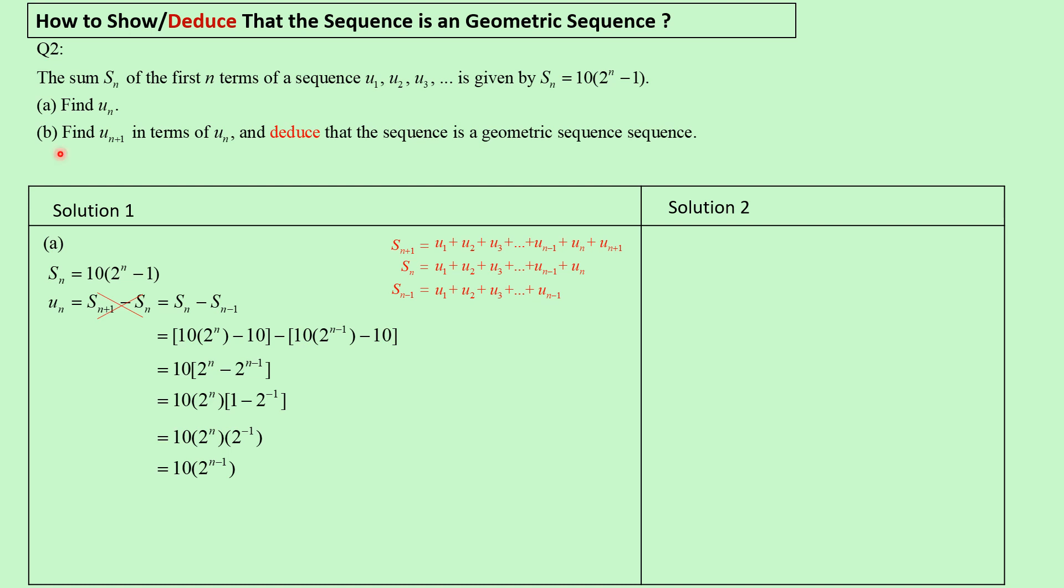Part b. We want to find un plus 1 in term of un. By using un and substitute n with n plus 1, you can find the term un plus 1 in term of un. With this, we say the ratio between two successive terms is a constant, equal to 2.